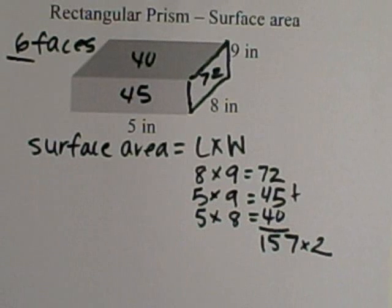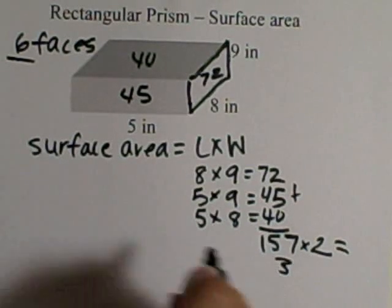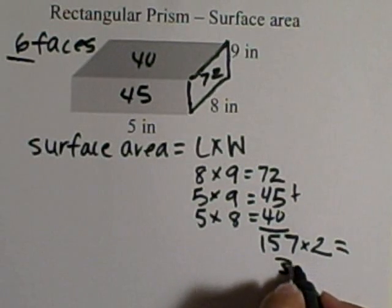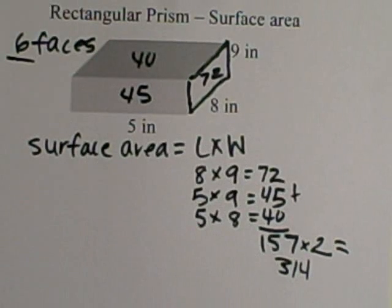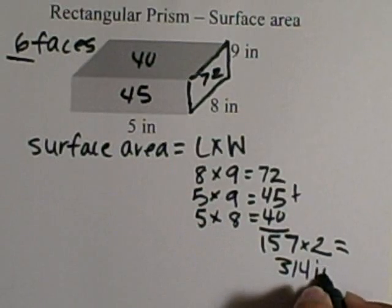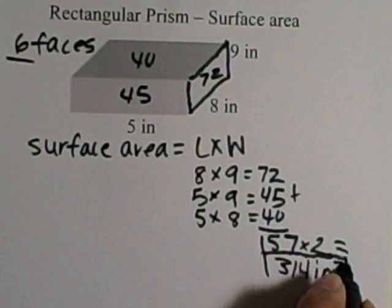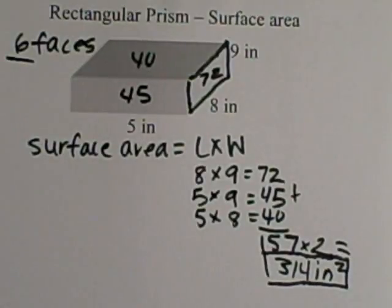So I'm going to do 157 times 2, and 157 times 2 equals 314. And that is my surface area. So I now know that the surface area of this rectangular prism is 314. It needs a label. I'm measuring in inches, so I'm going to do inches squared, and that becomes my total surface area.